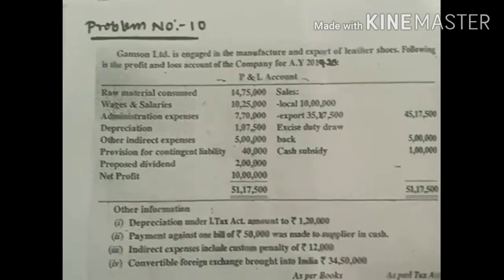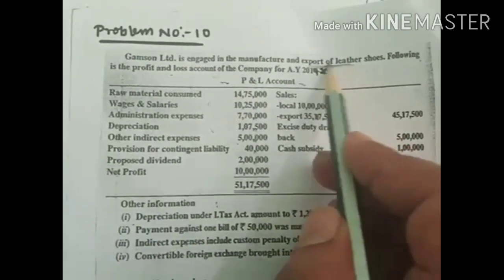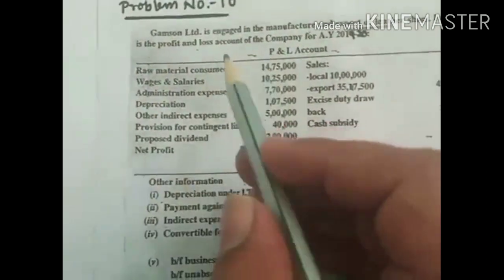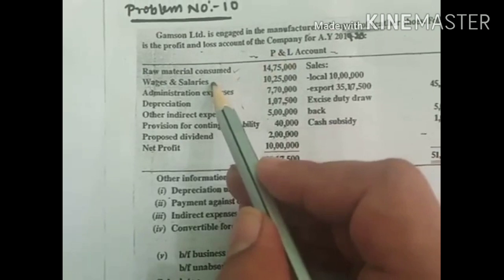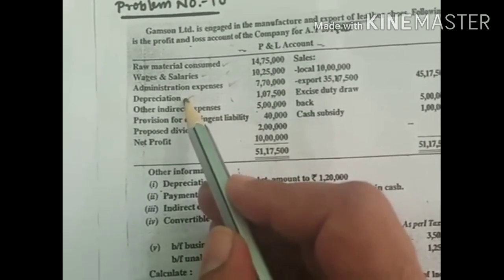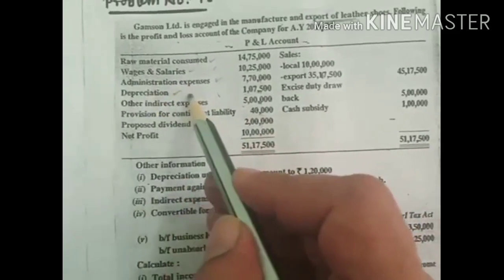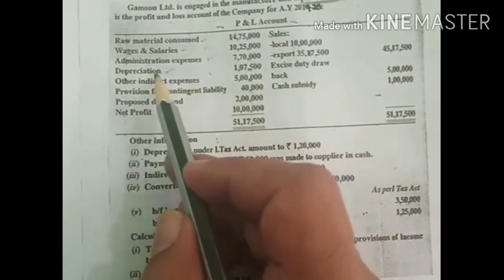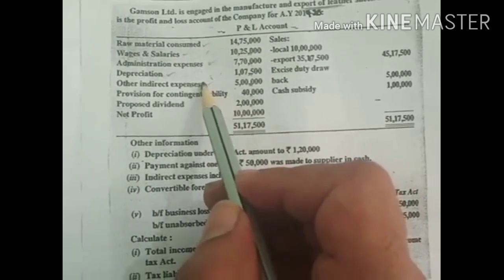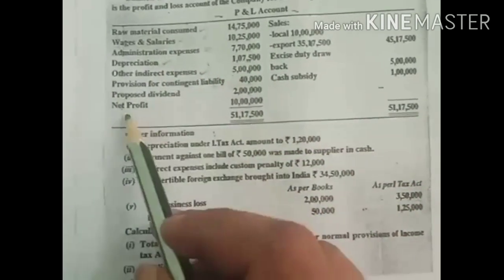Good morning students. We will now see Problem 10 under assessment of company. Gums Unlimited is engaged in manufacturing and exporting of leather business — specifically exporting of leather shoes. A profit and loss account is given for assessment year 2019-20. We identify business and non-business items: raw material consumed, wages and salaries, administration expense are all business expenses. Depreciation is given in both the P&L account and the adjustment — so add back the P&L amount and deduct the adjustment amount as admissible expense. Other indirect expenses including GST are business expenses. Provision for contingent liability and proposed dividend are non-business expenses — add back.